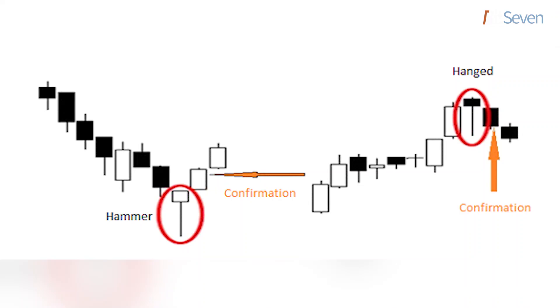Now let's return to the hammer and the hanged candles, which give a signal about a possible reversal of the trendline. The very color of this candle is not important. We need to pay extra attention to the presence of upper or lower shadows and their length. The color of the candle followed by them will be decisive for the reversal of the trendline.